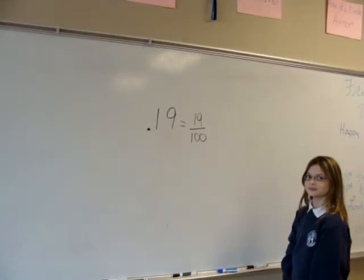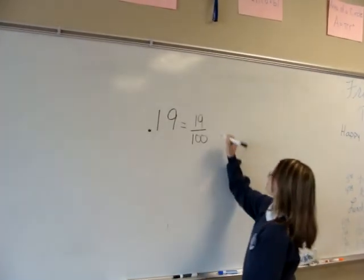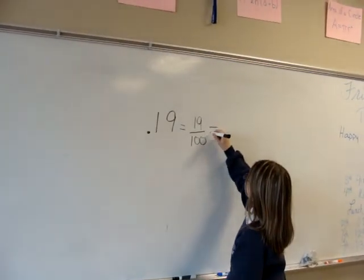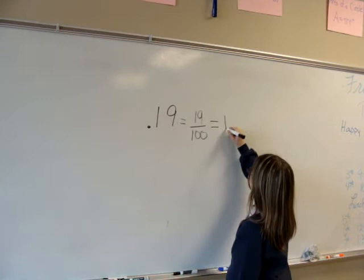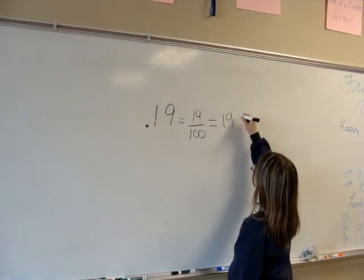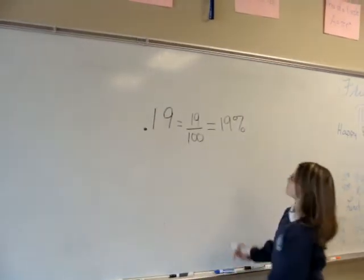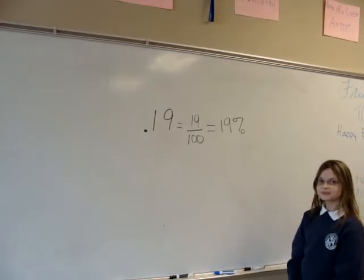Now we're going to take 19 over 100 and make that into a percent. Since it's already out of 100, it goes directly to 19 percent, because a percent is always out of 100.